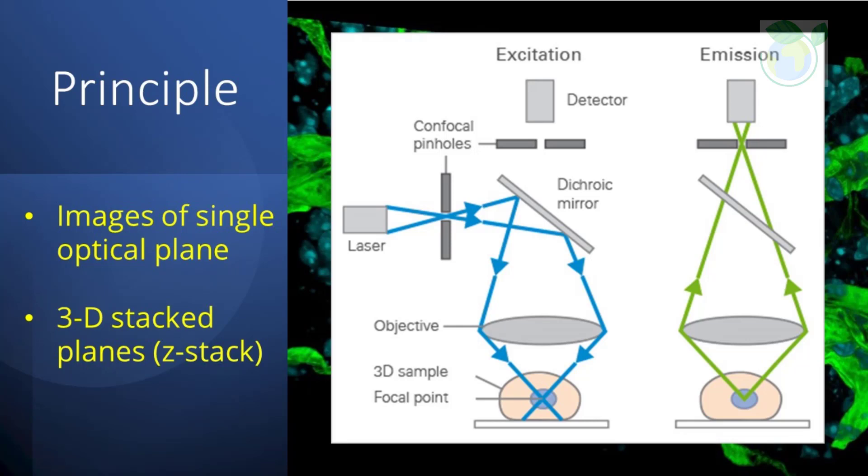3D objects can be visualized by scanning several optical planes and stacking them using a suitable microscopy deconvolution software, Z-Stack. It is also possible to analyze multicolor immunofluorescent staining using state-of-the-art confocal microscopes that include several lasers and emission or excitation filters.